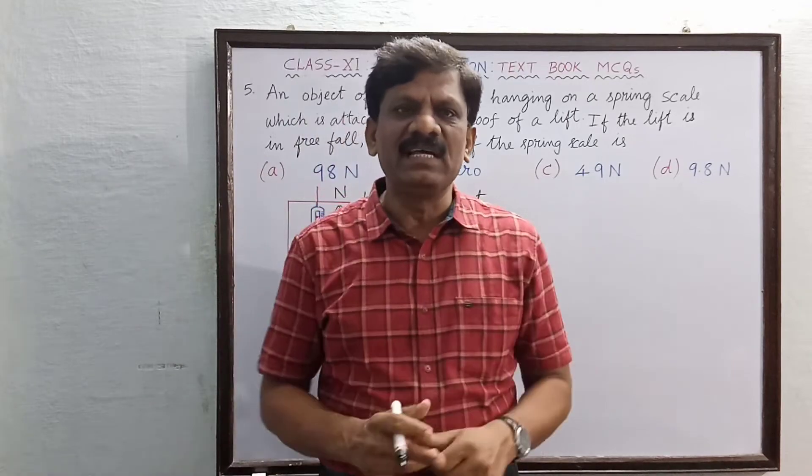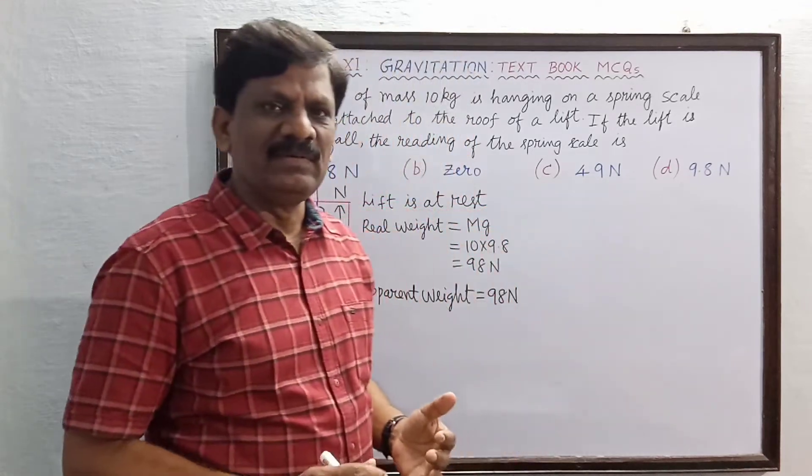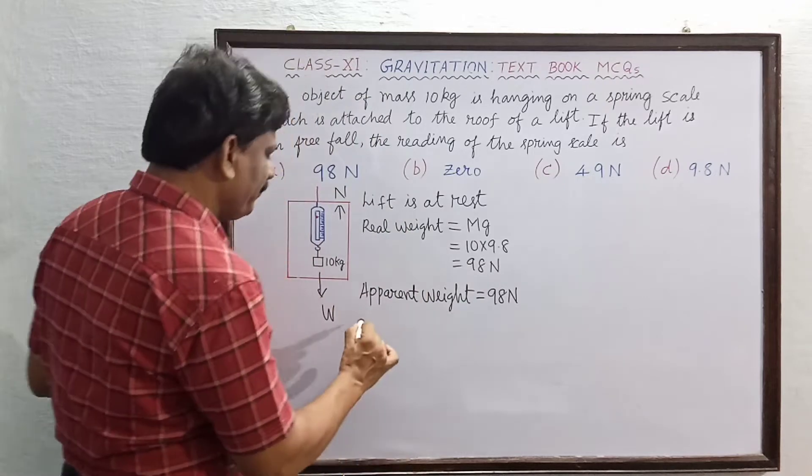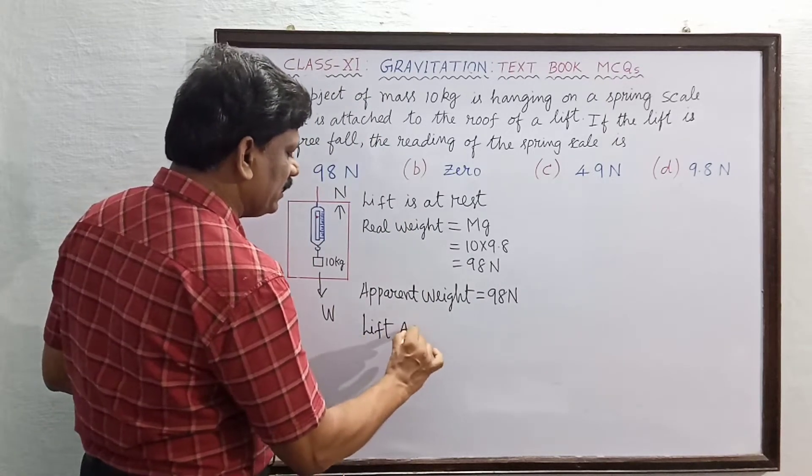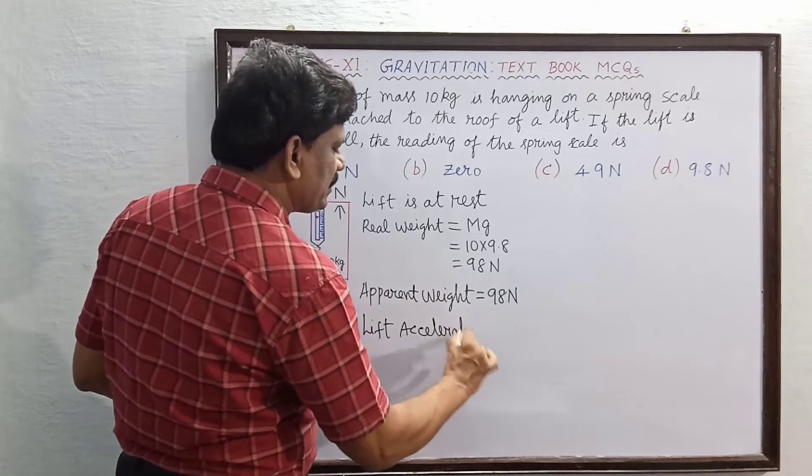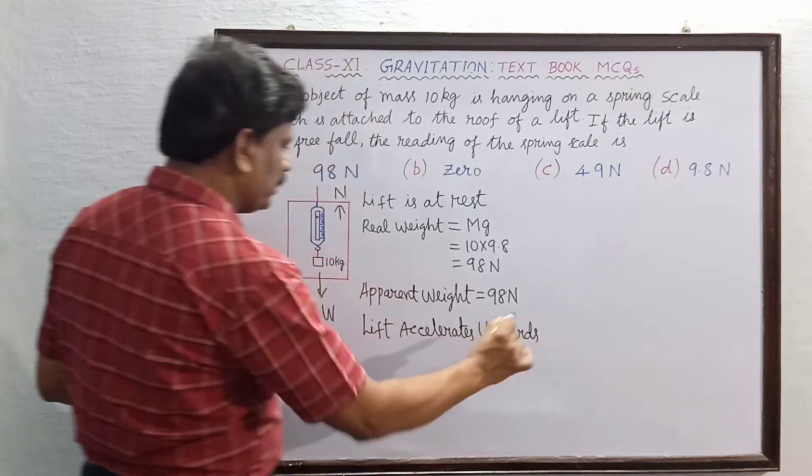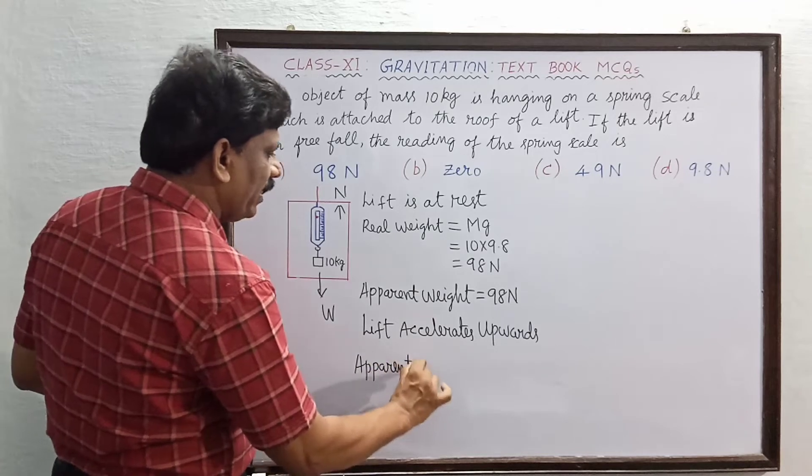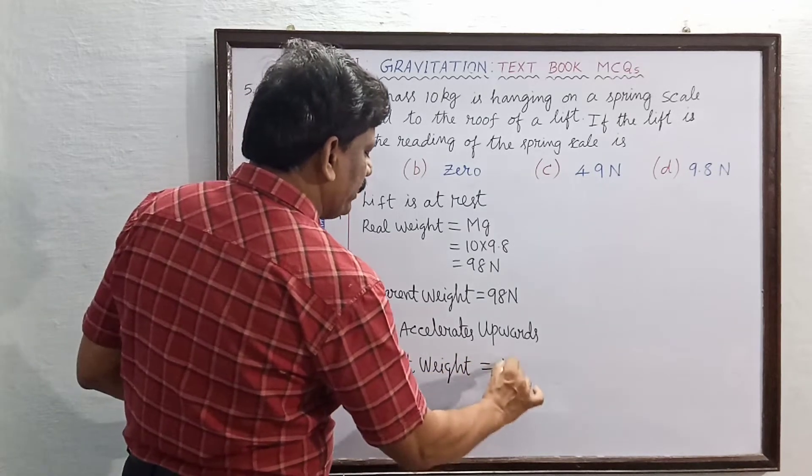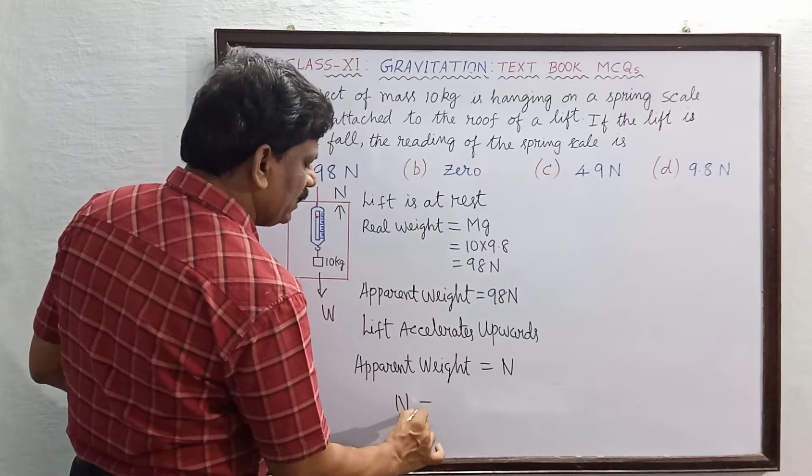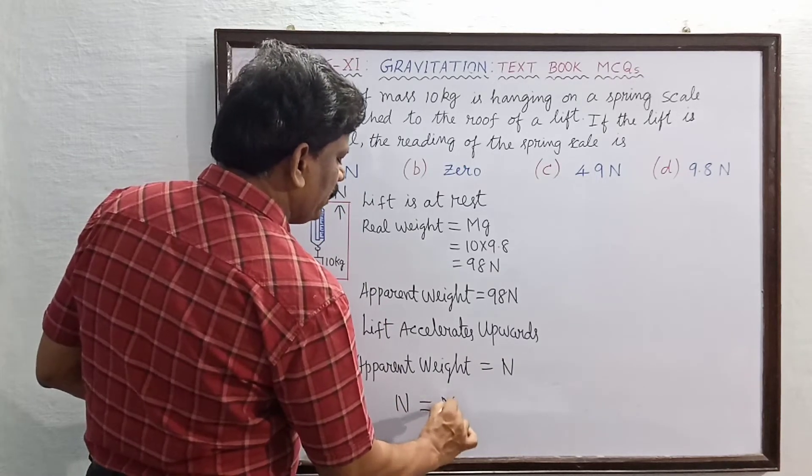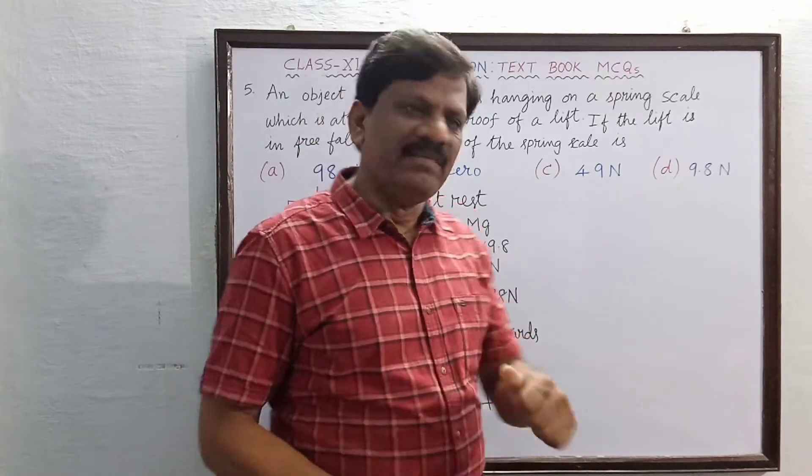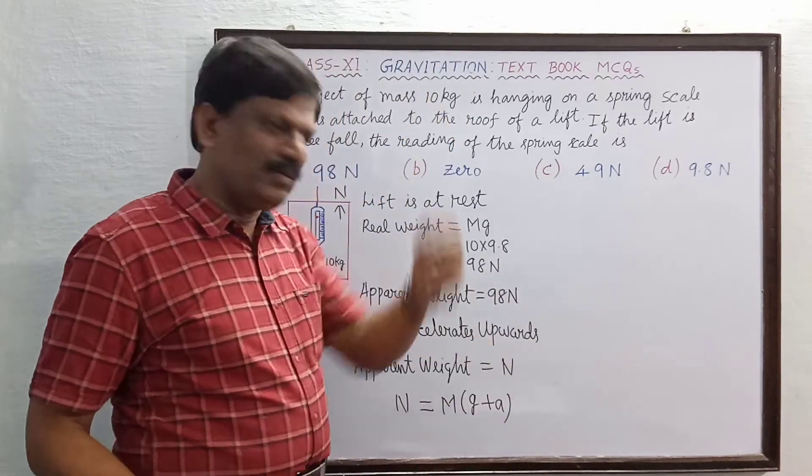Now, when the lift accelerates upwards, the apparent weight is equal to m into g plus a, where a is the acceleration of the lift.